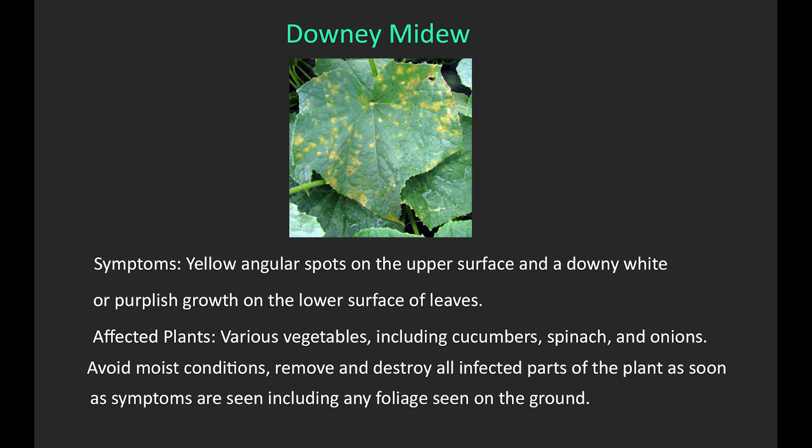2. Downy mildew. Symptoms: yellow angular spots on the upper surface and a downy white or purplish growth on the lower surface of leaves. Affected plants: various vegetables, including cucumbers, spinach, and onions. Avoid moist conditions and remove and destroy all infected parts of the plant as soon as symptoms are seen, including any foliage seen on the ground.